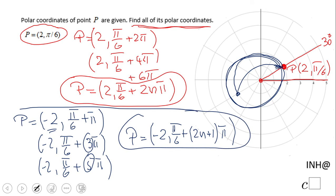And those are the two ways you can write the polar coordinates of point P.